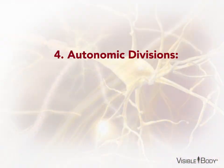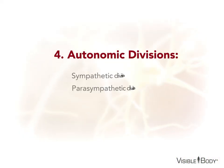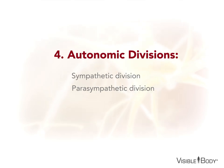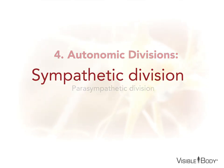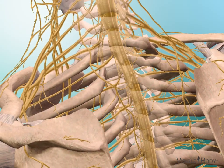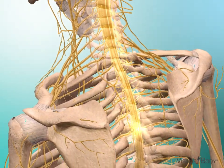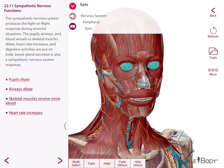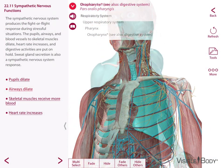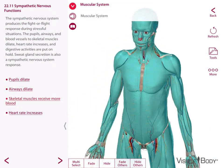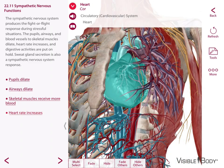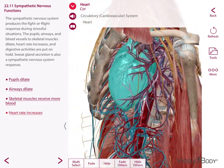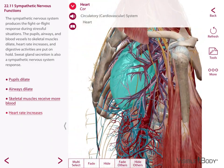Part 4: Autonomic Divisions. The ANS is divided into two divisions that are both structurally and functionally distinct. Sympathetic nerves exit the CNS in the cervical and thoracic regions. They stimulate fight-or-flight activities. The pupils, airways, and blood vessels that supply skeletal muscles dilate, heart rate and respiration increase, and digestive activities are put on hold. Sweat gland secretion also kicks up.